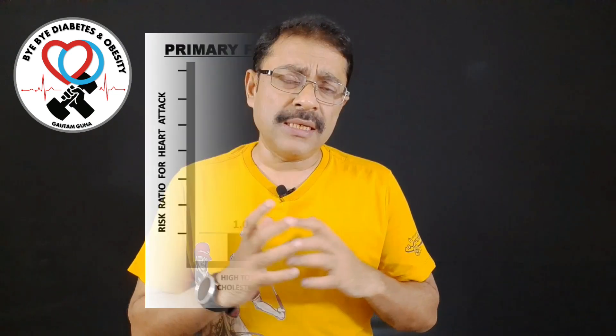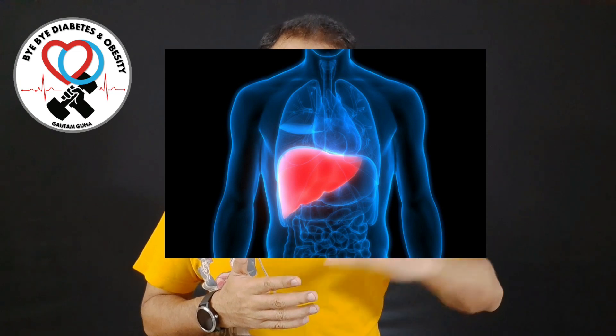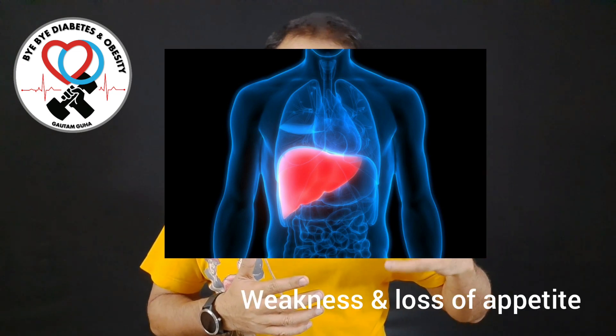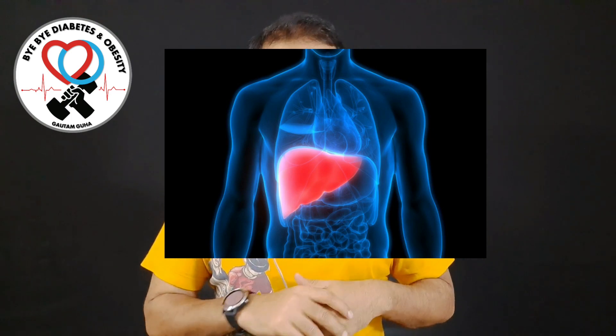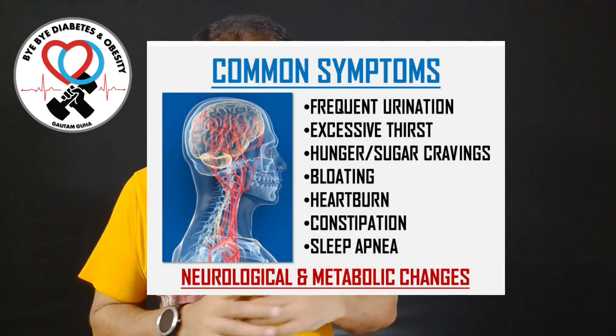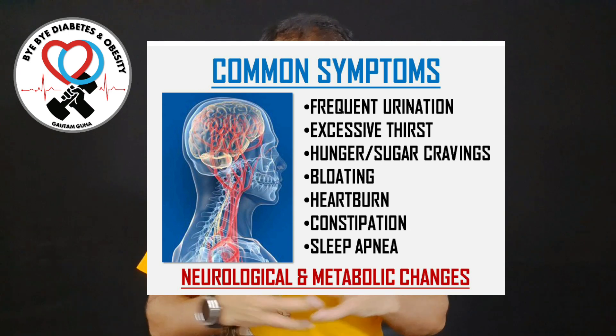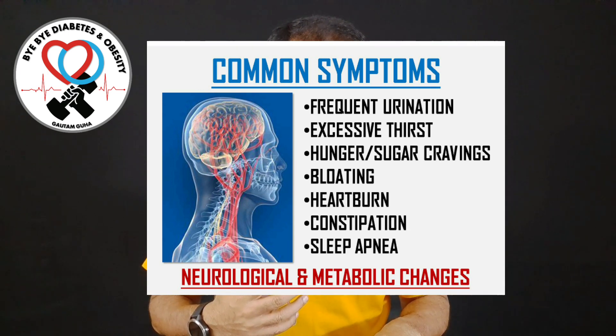Insulin resistance is also responsible for poor liver health. It results in liver cirrhosis, your bilirubin counts go up, there is weakness and loss of appetite. It is also responsible for various neurological and metabolic changes in your body. Some of these symptoms are also seen in diabetics: frequent urination, excessive thirst, hunger, sugar cravings, bloating, heartburn, constipation, and sleep apnea.